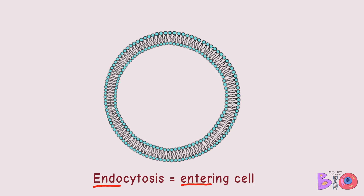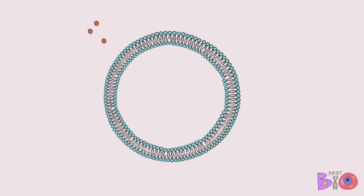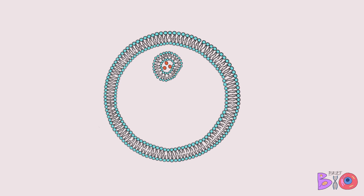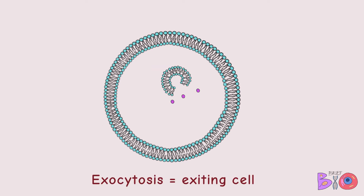Next is endocytosis. "Endo" means entering, so this type of transport involves molecules entering the cell. Molecules will enter through a vesicle formed as the cell membrane surrounds the molecules, then they will be released inside the cell.